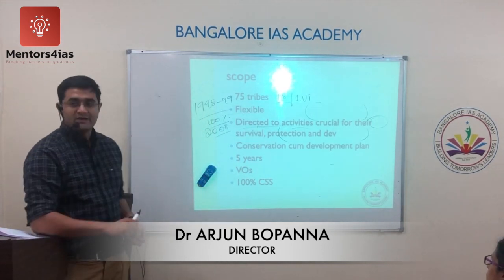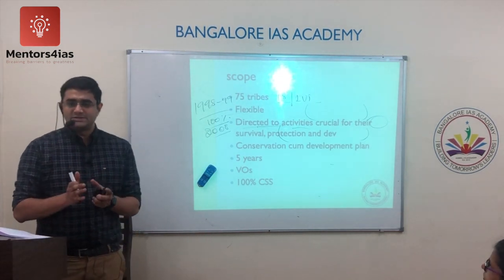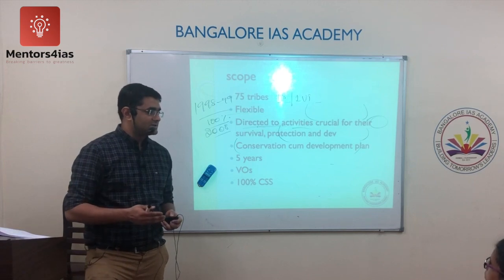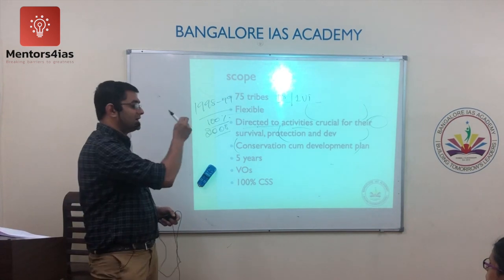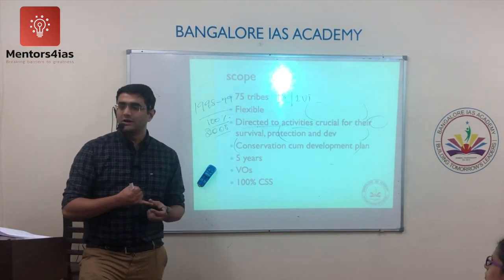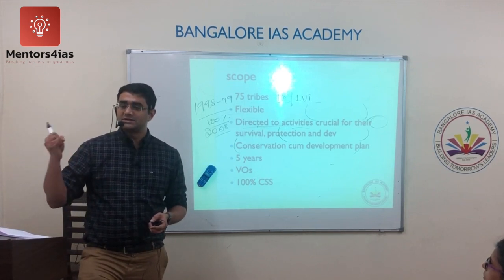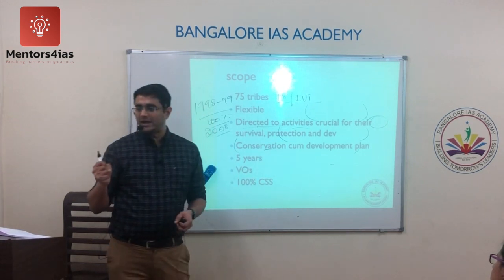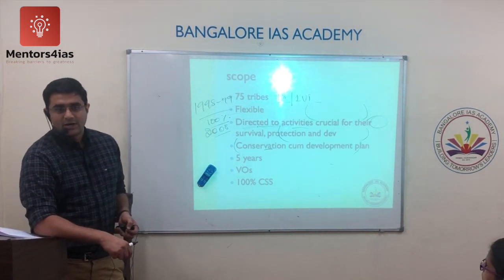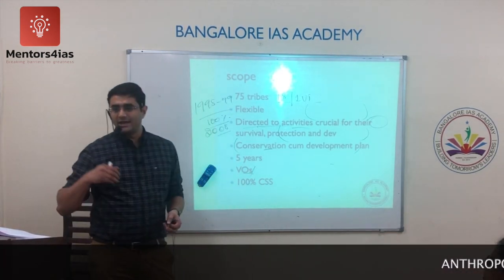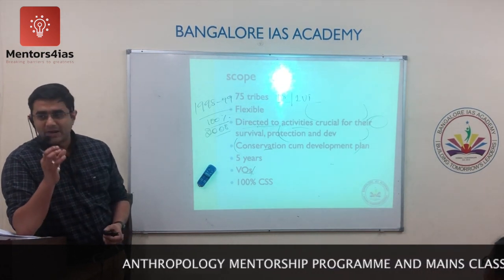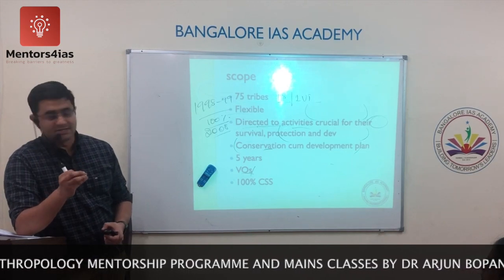For every PVTG, a Conservation cum Development Plan is developed — conservation to increase their population numbers, combined with development. Each of the 75 tribes must have such a plan, developed with involvement of existing institutions like the Integrated Tribal Development Project (ITDP), ITDA, and tribal research institutions. Each plan is applicable for five years. Voluntary organizations and NGOs are involved in both planning and implementation. It is a 100% centrally sponsored scheme.